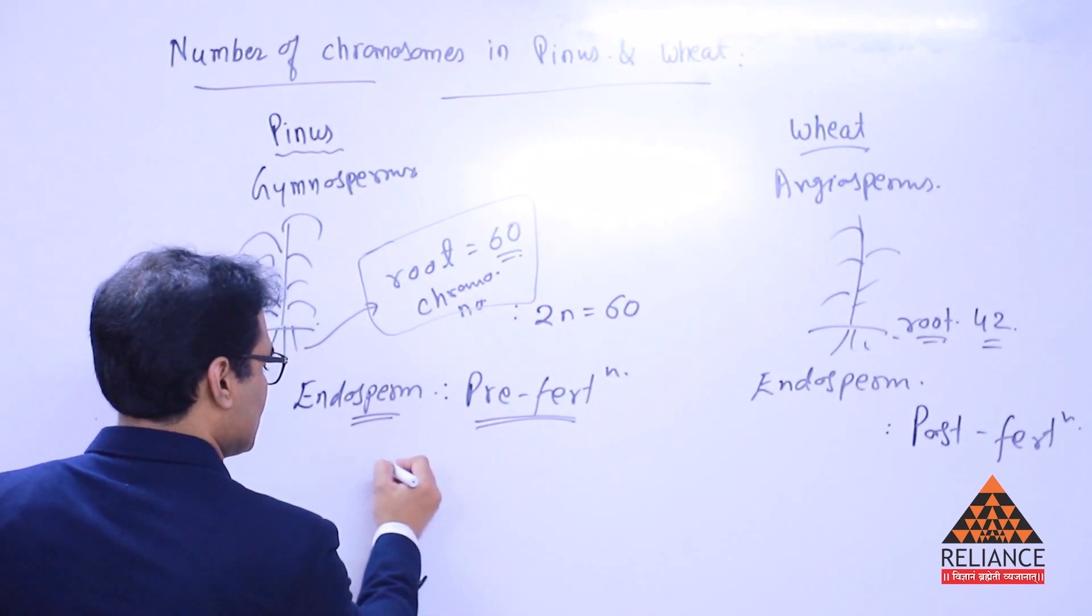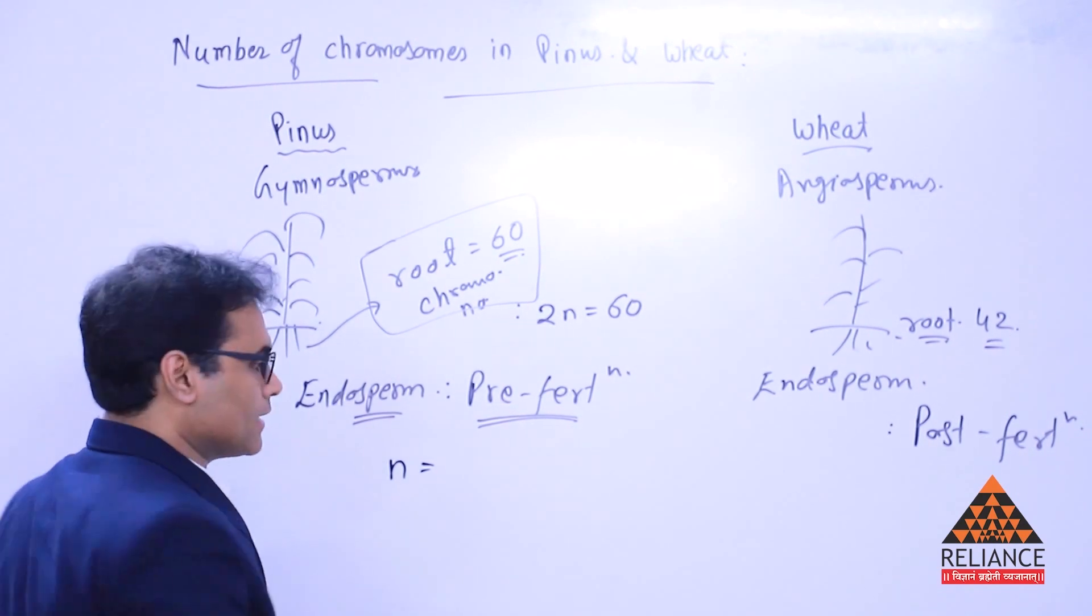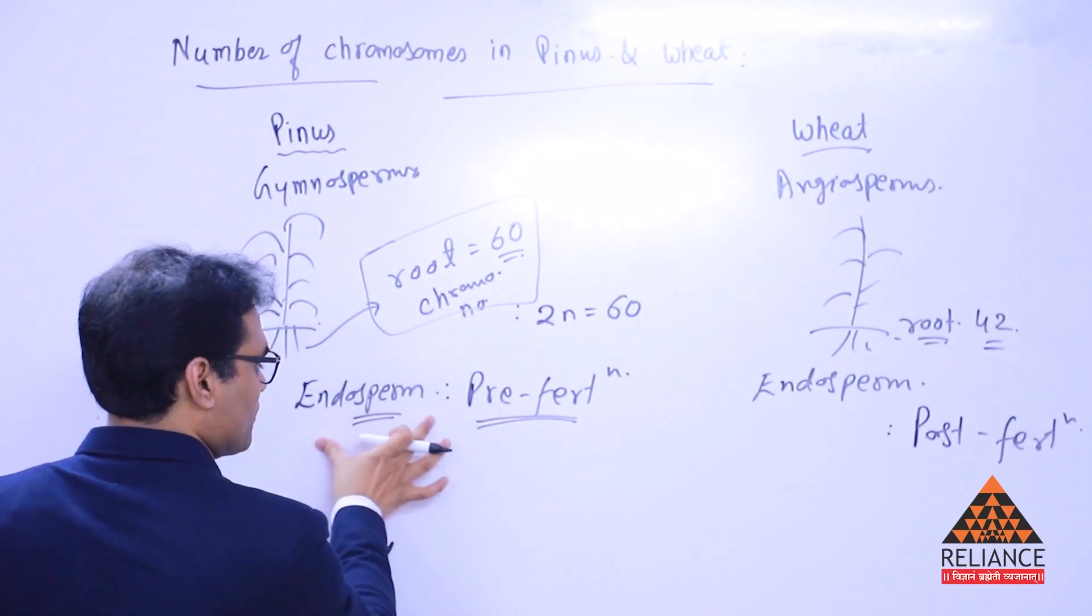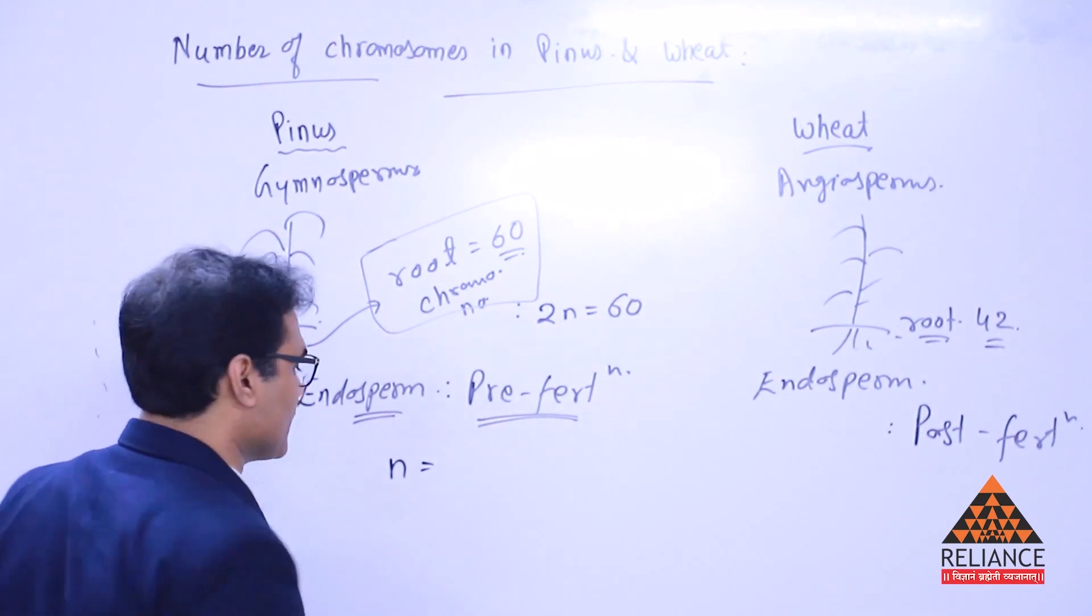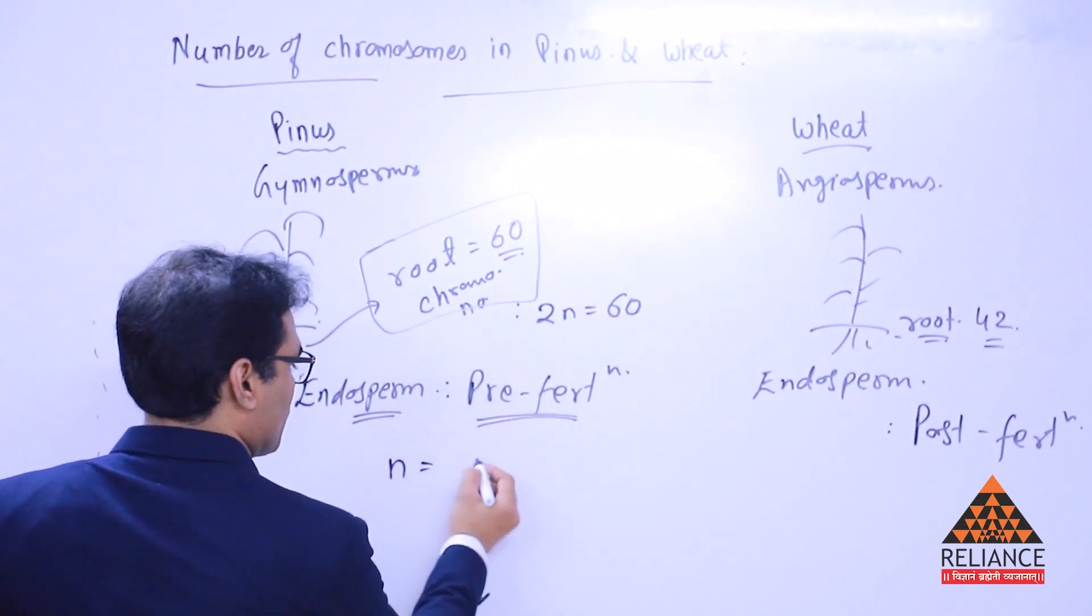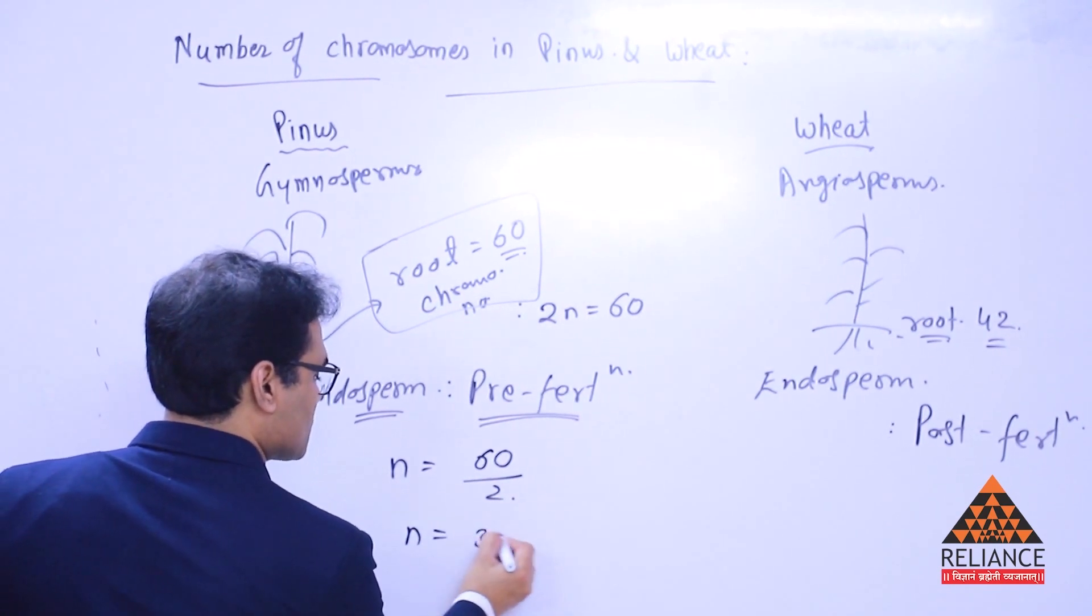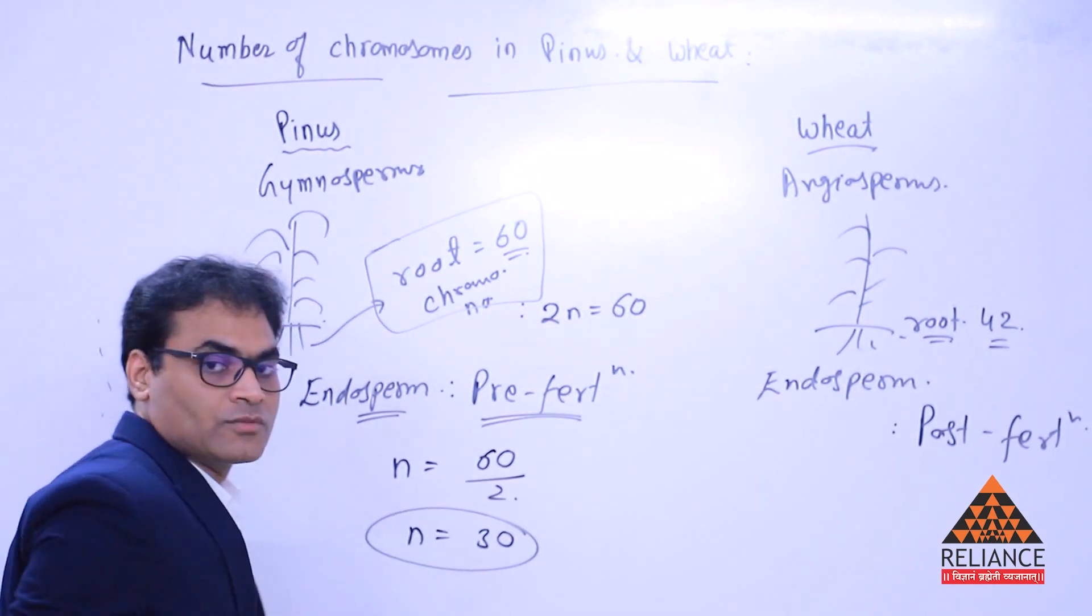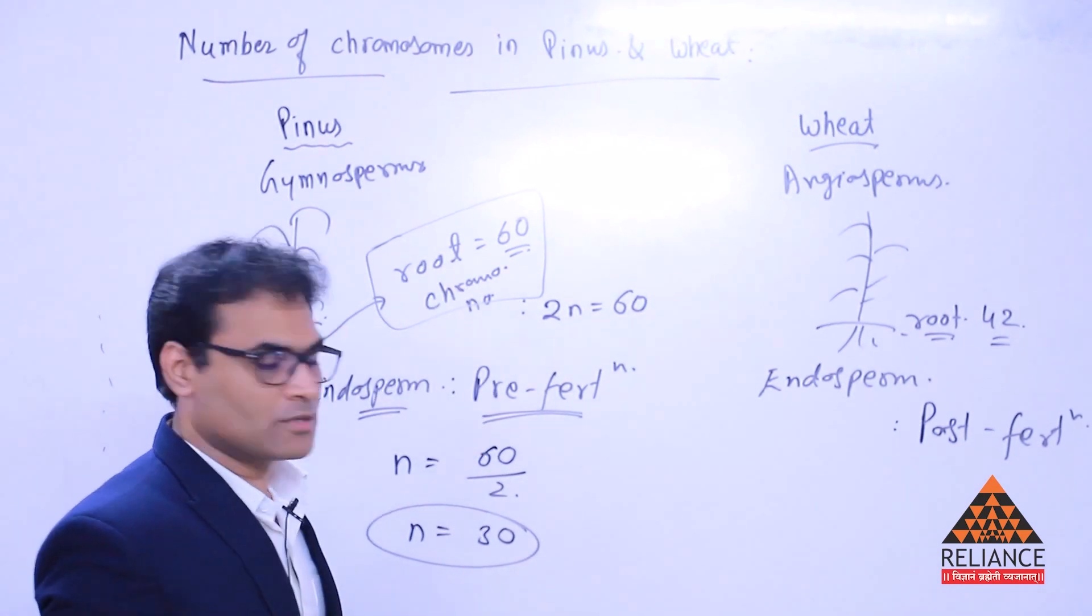Now, what you're going to do is find out the number of chromosomes in any of the endosperm cell. Definitely, it must be haploid because, as I say, it's a pre-fertilization event. In case of pre-fertilization event, the endosperm formation, the chromosomes will be represented only in the haploid state. So, this 2N, 60, divided by 2, you get N value as 30. Number of chromosomes present in endosperm cell of Pinus, which is a kind of gymnosperm.